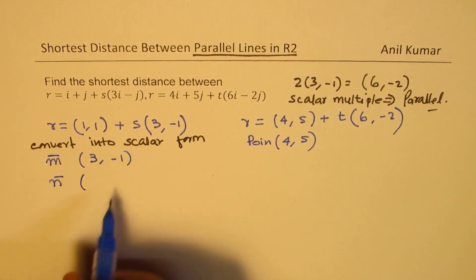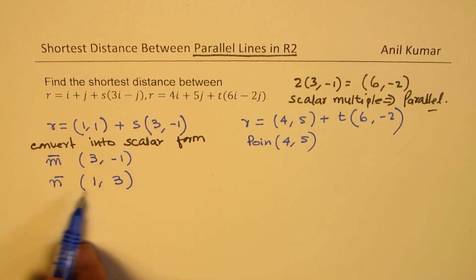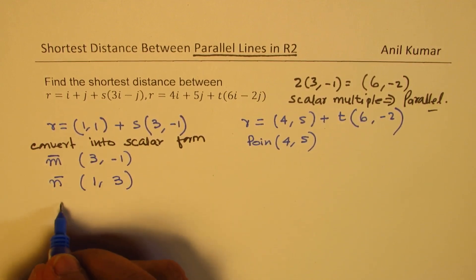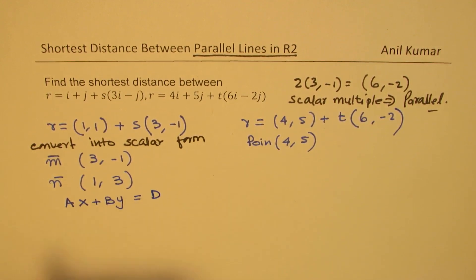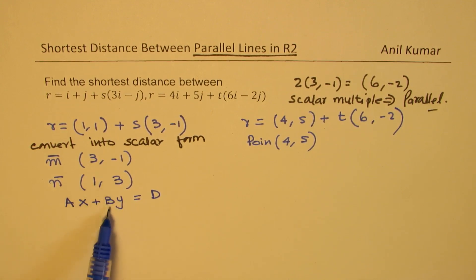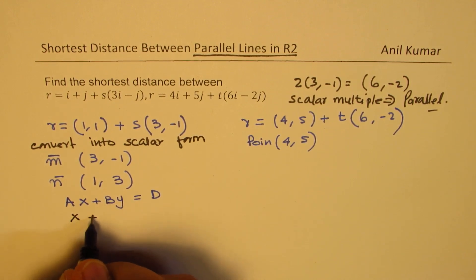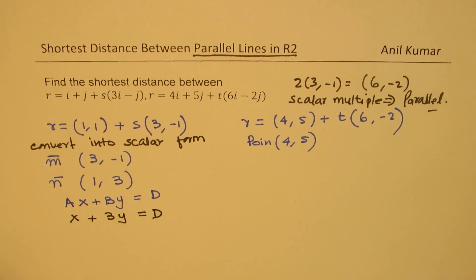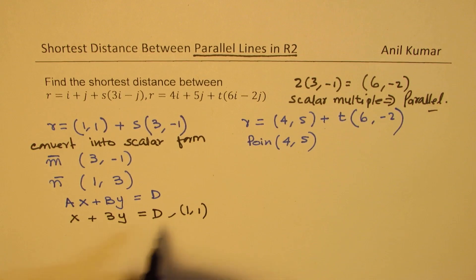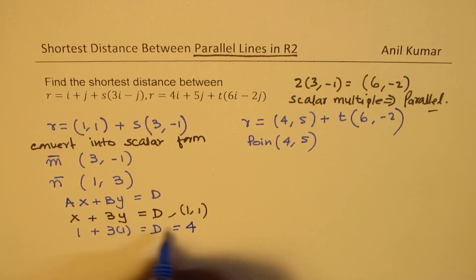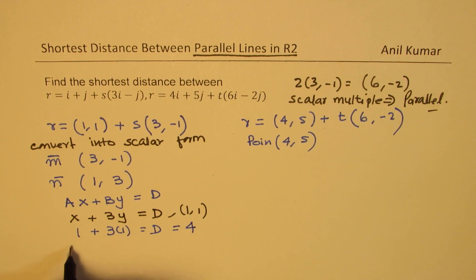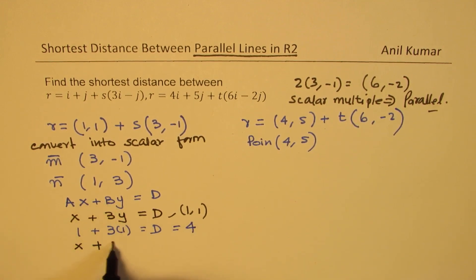To convert to scalar form, the direction is m equals (3, -1), so the normal is obtained by swapping components and changing one sign: normal is (1, 3). The line equation is x plus 3y equals D. Substituting the point (1, 1): 1 plus 3 times 1 equals 4, so D equals 4, giving x plus 3y minus 4 equals 0.